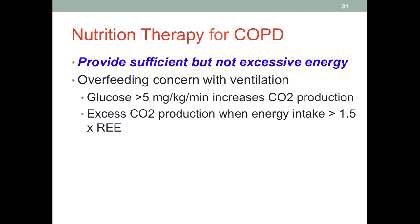When we talk about overfeeding, we need to remember the magic number of 5 milligrams per kilo per minute — that is the maximum glucose infusion rate if the patient requires tube feeding. We definitely don't want to get close to this number because too much carbohydrate can increase carbon dioxide production, and CO2 requires the lungs to breathe it out. Therefore, the more carbon dioxide, the more work for the lungs.